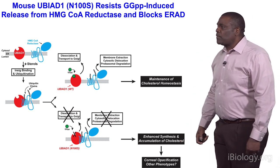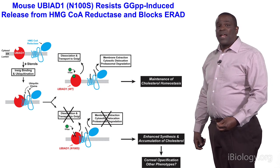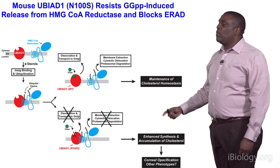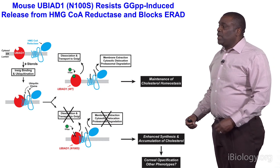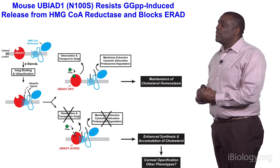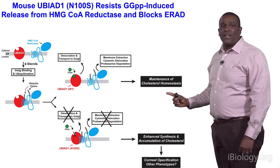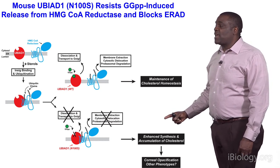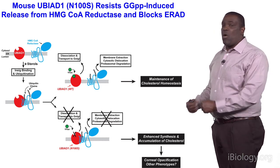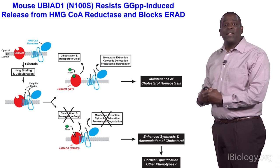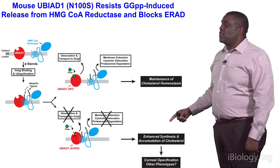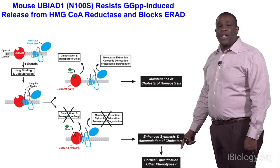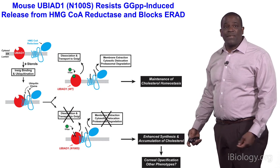These studies confirm that mouse N100S, like human N102S, resists GGPP-induced release from reductase and blocks ERAD. Under normal conditions, GGPP sensing mediated by UBIAD1 is responsible for maintaining cholesterol homeostasis. In SCD mice, this sensing of GGPP is disrupted, causing UBIAD1 to always associate with reductase, blocking ER-associated degradation. This leads to enhanced synthesis and accumulation of cholesterol, contributing to the corneal opacification that characterizes SCD, and perhaps other phenotypes yet to be discovered.